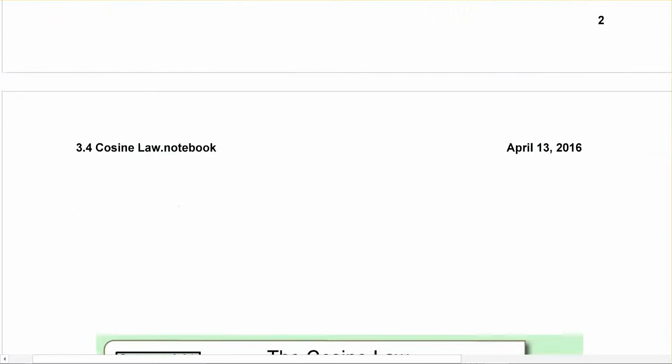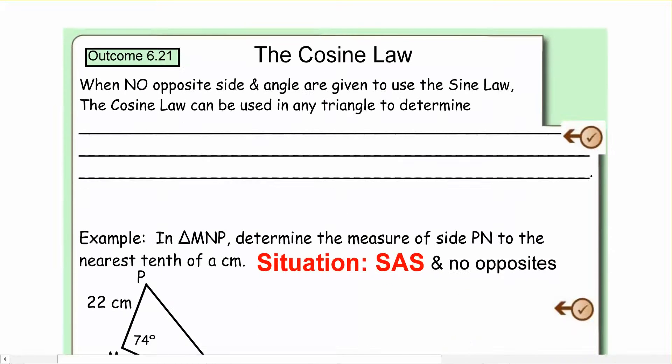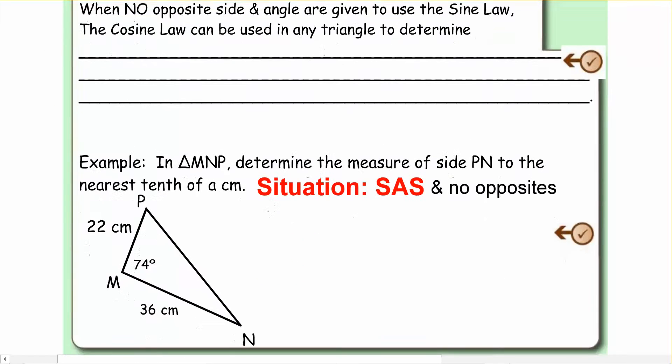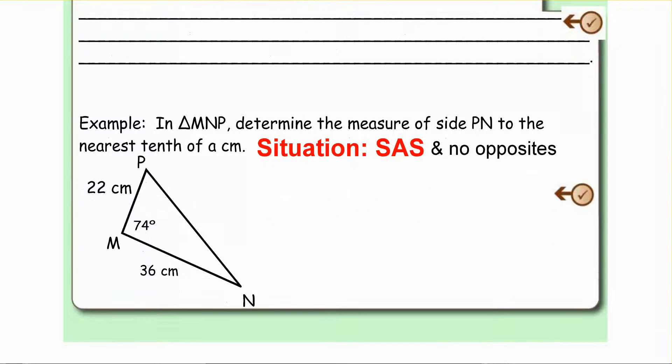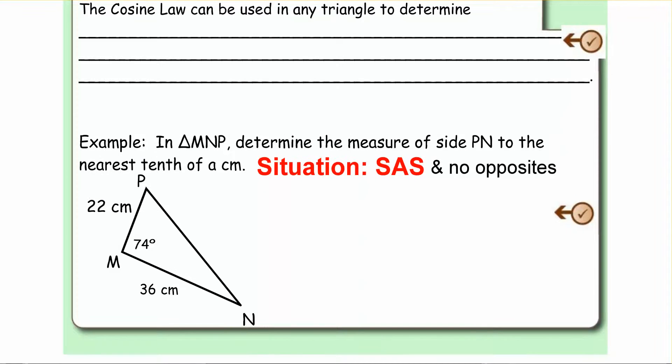So there's going to be two situations when we use the cosine law instead of the sine law. And that's going to be when we have SAS. What that means is side, angle, side.